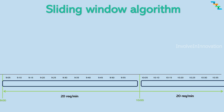Let's see this with an example. First, we need to define the rate limit of the Sliding Window range. Here it is 20 requests per minute. We need to keep track of the incoming request timestamps for the window period. A linked list can be used to store the requests with their timestamps for the window period.